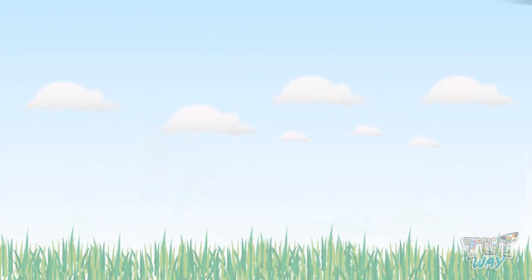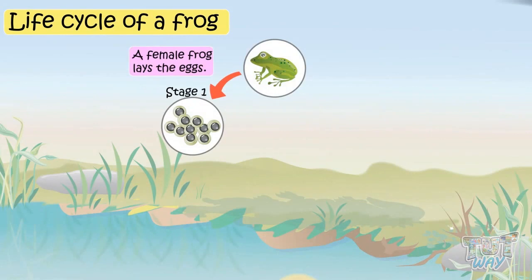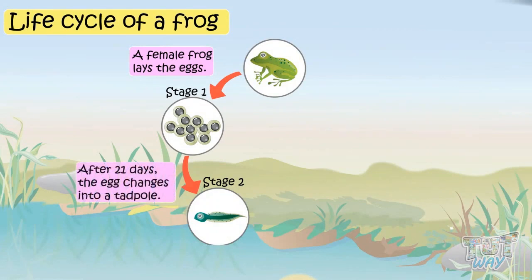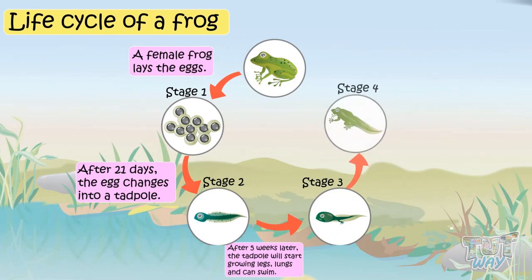Now we will learn the life cycle of a frog. First, a female frog lays eggs. In stage two, after about 20 or 21 days, the eggs change into tadpoles that look more or less like small fish.